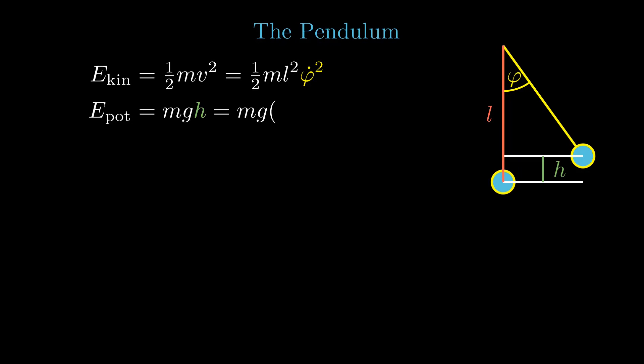This height h can be expressed by the difference between the length of the stick and the purple side of this right triangle. The two expressions form the Lagrangian and the action for the system.